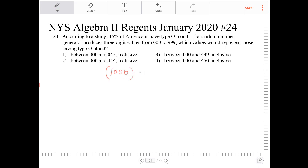So we're multiplying 1,000 by 45%, and what that will give us is 450. So we're looking for an answer choice where we'll have numbers that contain 450 different numbers.